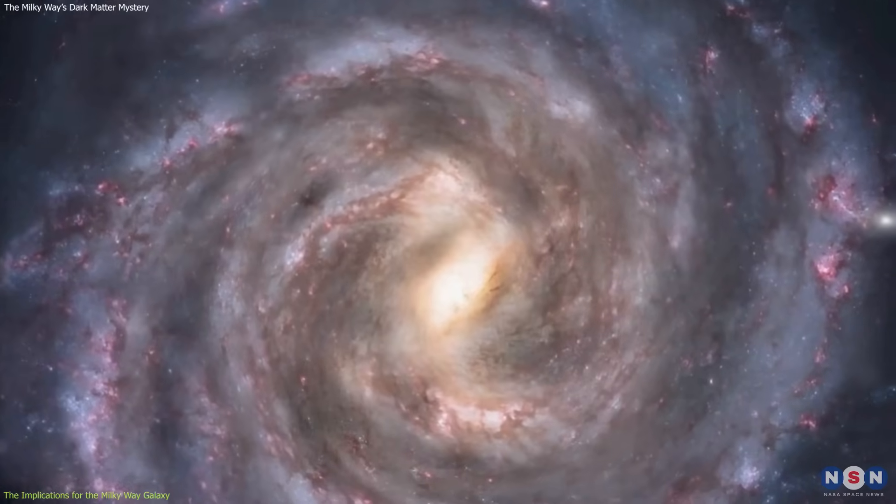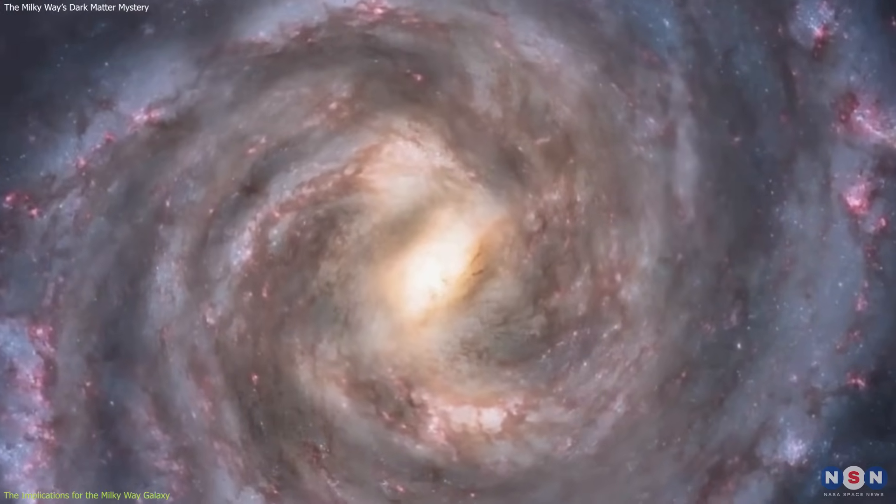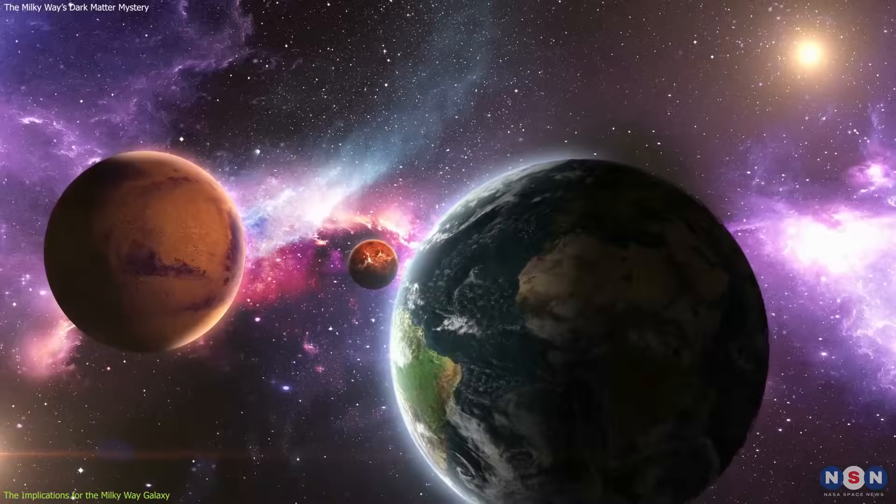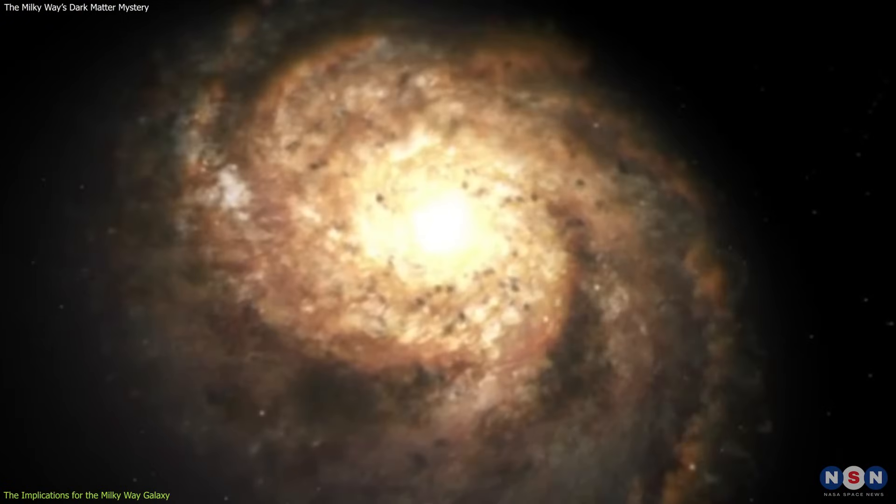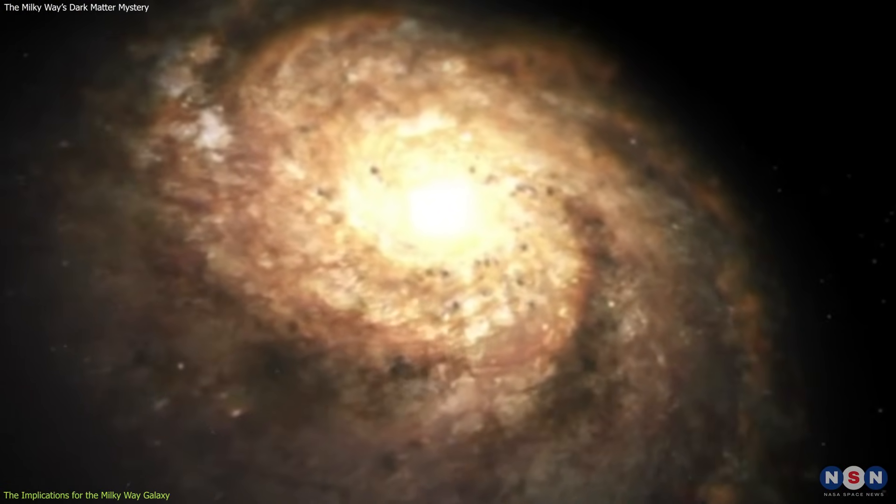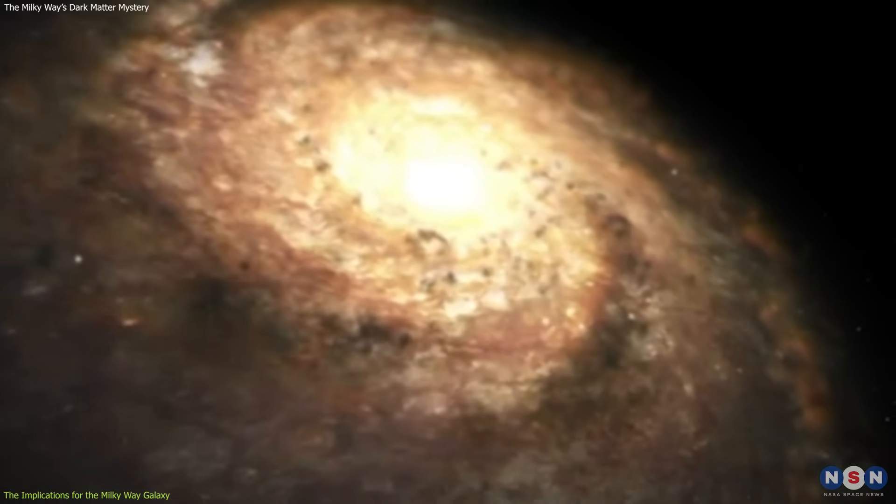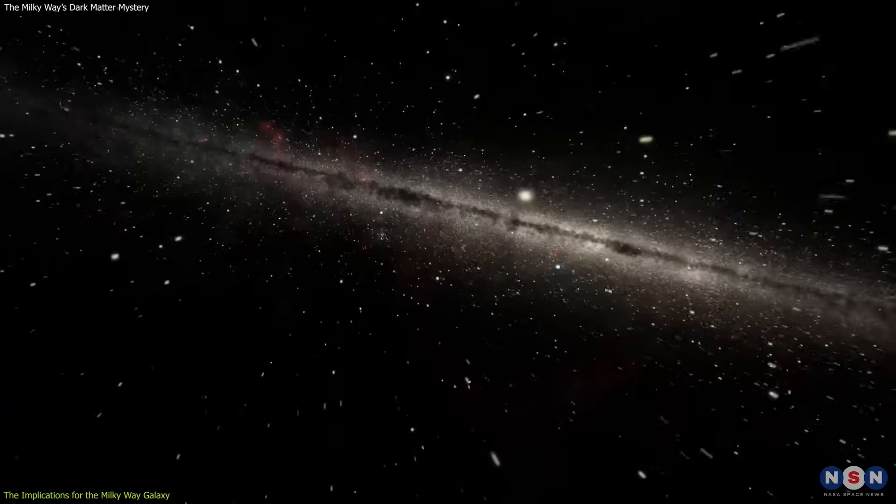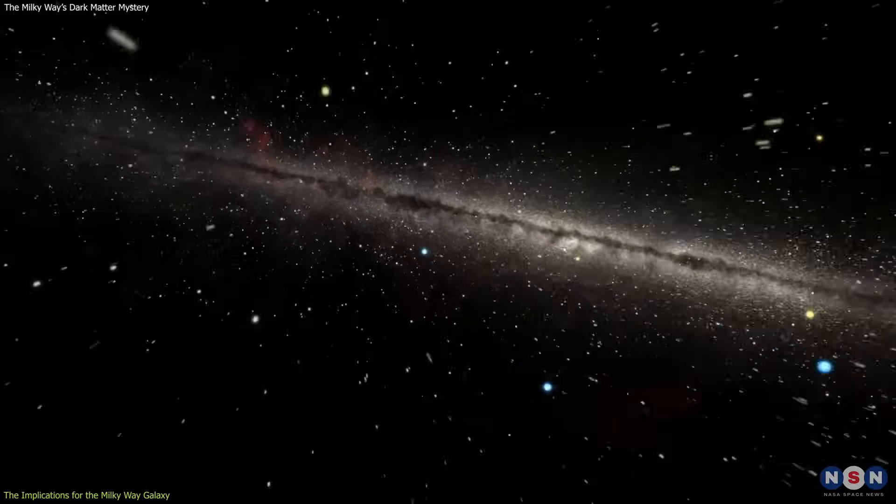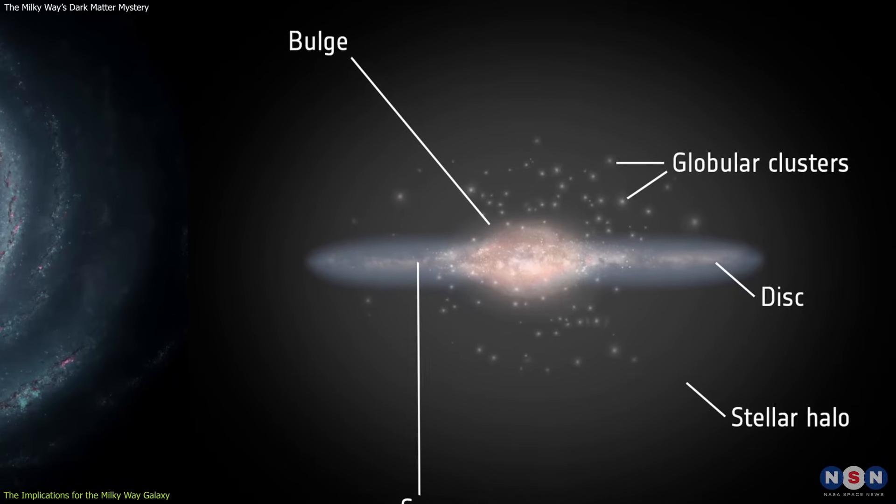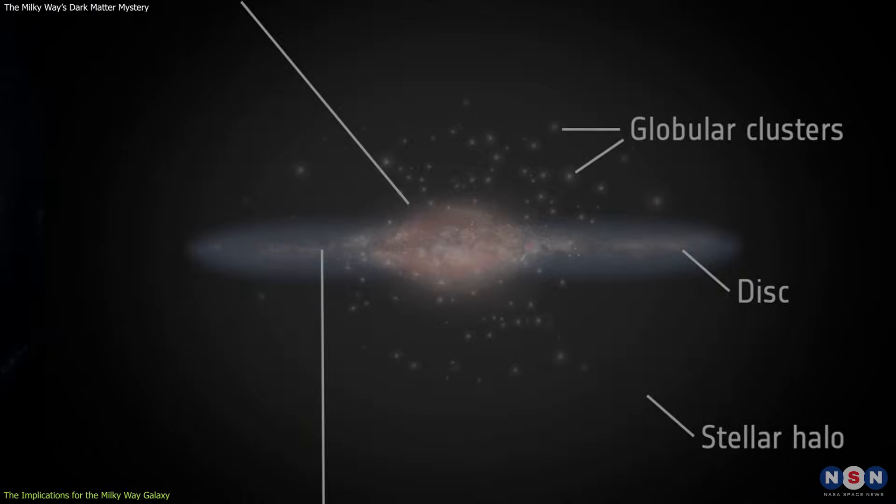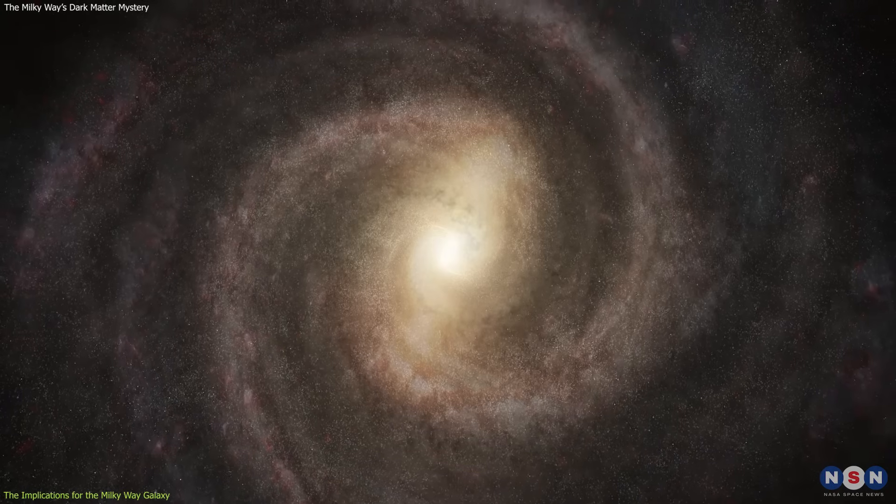This also has implications for the evolution of the disk of the Milky Way galaxy, which is the part where we live. It is thought that the disk is the result of the accretion of gas and stars from the intergalactic medium, and the formation of new stars from the gas. The disk is also influenced by the gravitational force of the bulge and the halo, which affect its stability and dynamics.